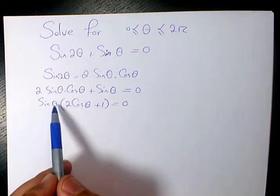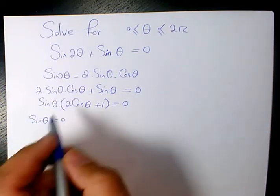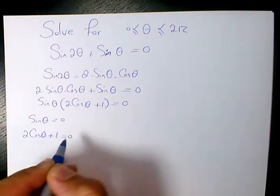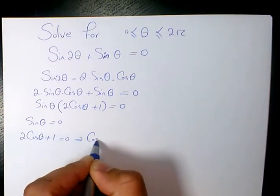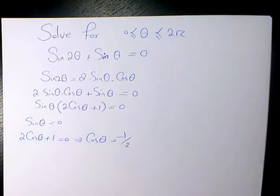So we have two cases: one when sine theta equals 0, and the second one when 2 cosine theta plus 1 equals 0, which means cosine theta equals negative 1 half.